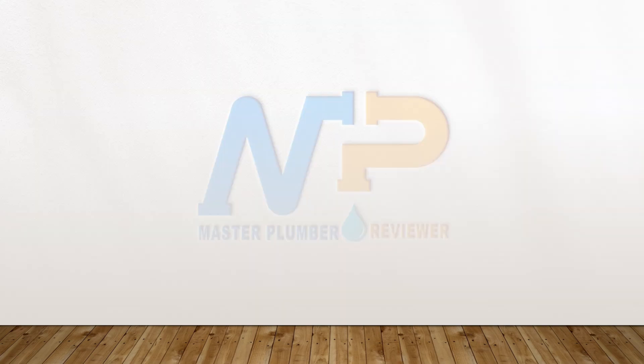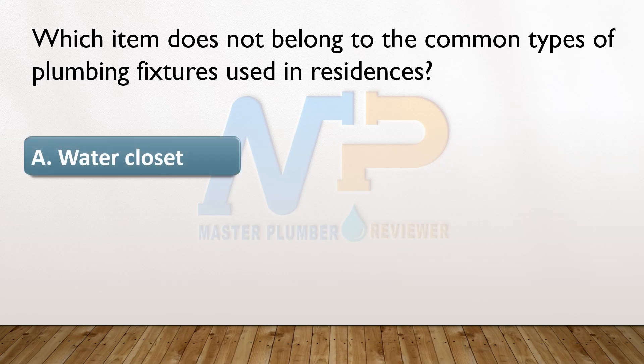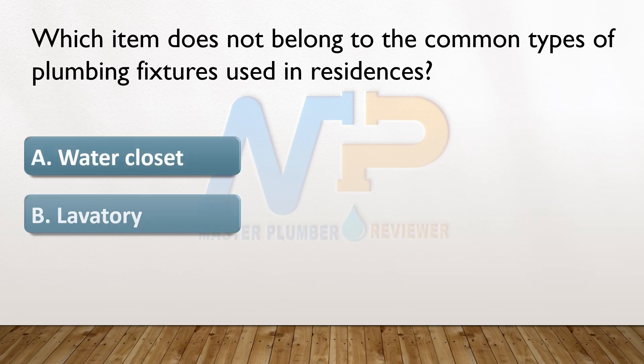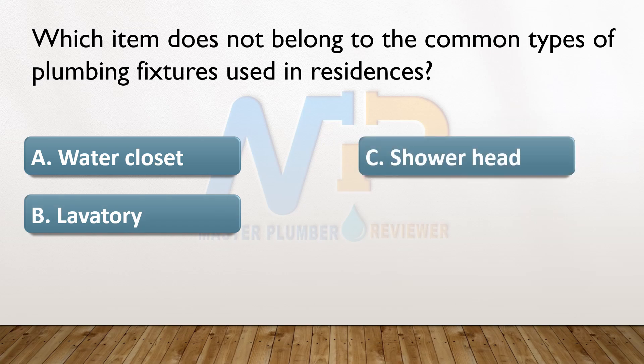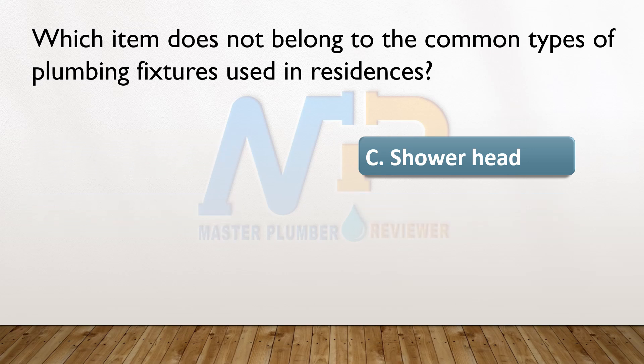Which item does not belong to the common types of plumbing fixtures used in residences? A. Water closet. B. Lavatory. C. Shower head. D. Kitchen sink. The answer: C. Shower head.